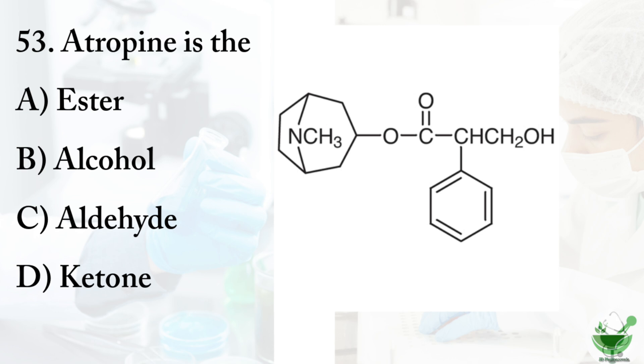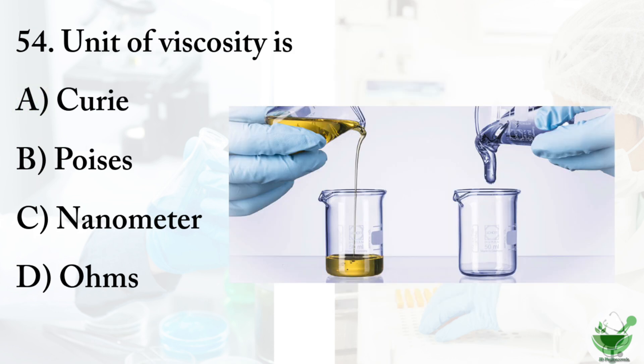Question number 53: Atropine is — option A, ester; option B, alcohol; option C, aldehyde; option D, ketone. The correct option is option A, ester. Question number 54: Unit of viscosity — option A, Curie; option B, Poises; option C, nanometer; option D, Ohms.